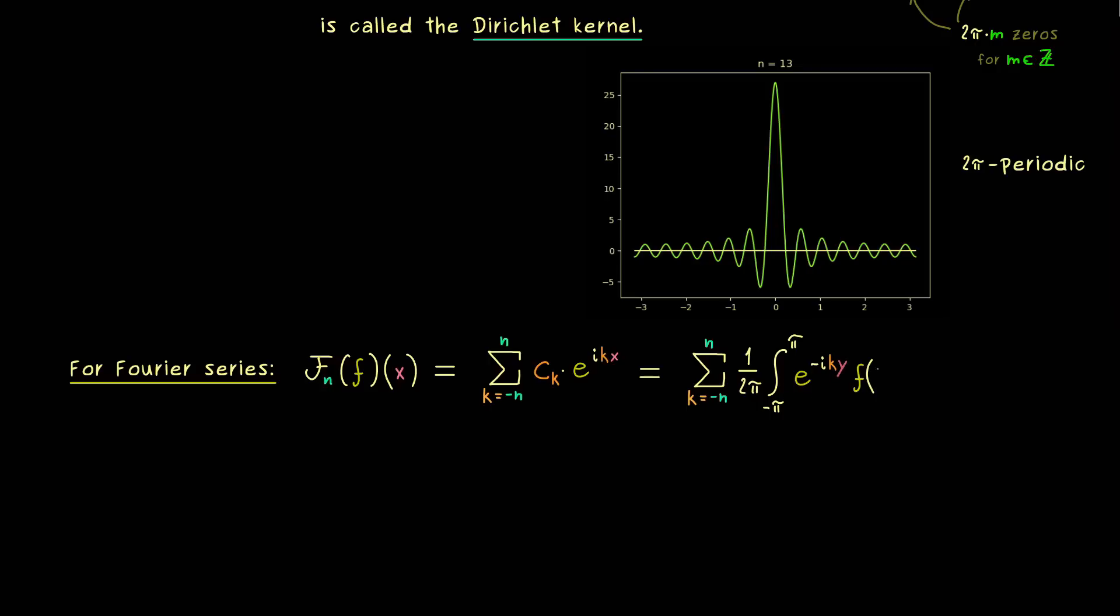However, since x is already used, we should use a new variable y inside the integration. And there we have it, this whole thing is just c_k in our sum. Which means we still have to multiply with our exponential function at the end. And now since we have a finite sum, we can just pull it into the integration. So first we have our integral, then f of y, and then the whole sum of the exponential functions. However, there we can easily put them together by writing i k times (x minus y) in the exponent. So the sum is just over the exponential functions, and there we recognize our definition of the Dirichlet kernel. In fact, it's just D_n at the position x minus y.